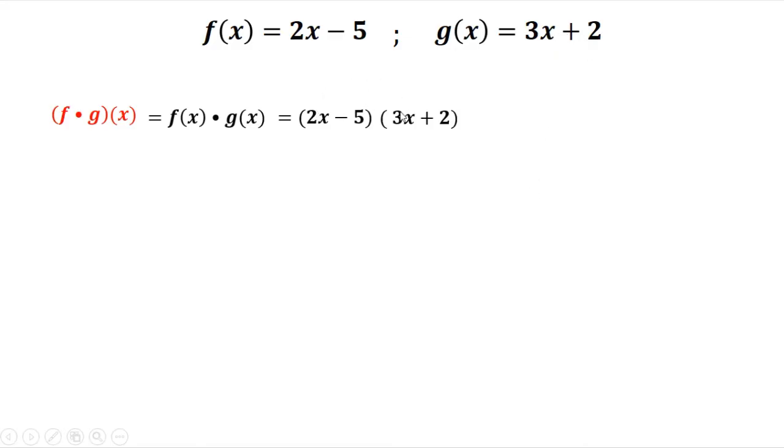This one, 6x squared plus 4x and negative 15x, then negative 10. Then you combine like terms, so we have positive 4x and negative 15x, that's 11x. So we have 6x squared minus 11x minus 10, so this is the answer.